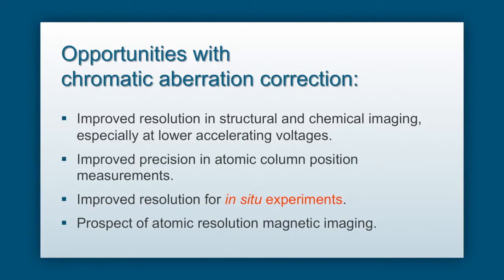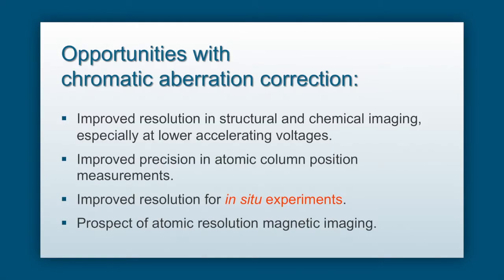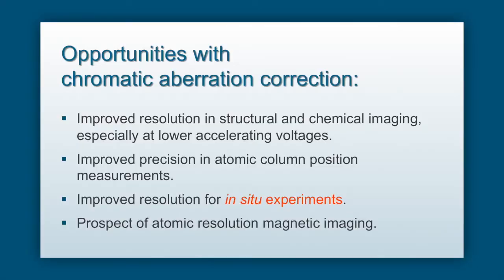Chromatic aberration correction allows us first to improve the spatial resolution of structural and chemical information, and this improvement is greatest at the lower accelerating voltages. Lower accelerating voltages are important because high-energy electrons damage many materials; lower voltages allow us to look at beam-sensitive materials with good spatial resolution. Combined chromatic and spherical aberration correction also provides better precision in atomic column position measurements, with the present generation of instruments offering the possibility of one picometre precision.